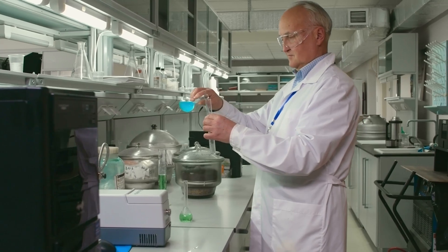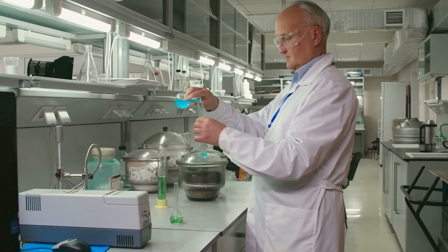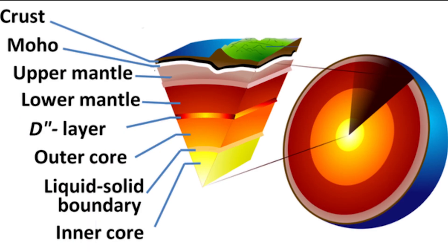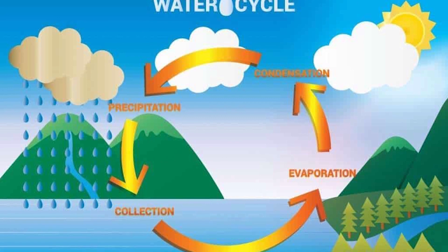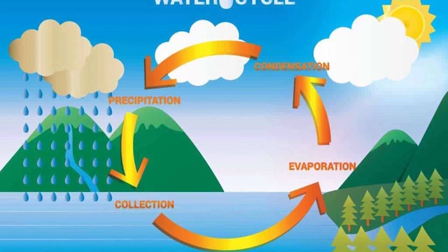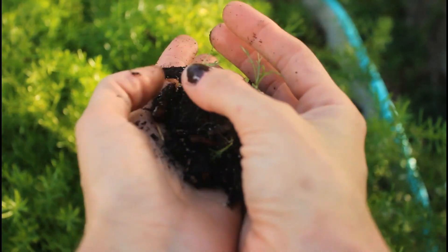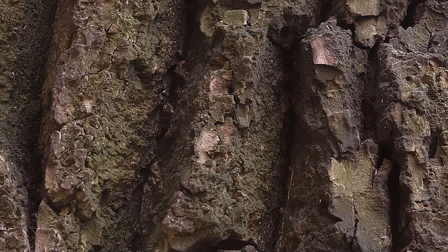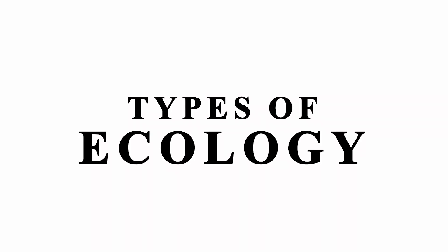Abiotic Components. Abiotic components are the physical and chemical parts of an ecosystem that are not living. The atmosphere, the lithosphere, and the hydrosphere could provide these things. Some examples of abiotic parts are sunlight, soil, air, water, minerals, and more.